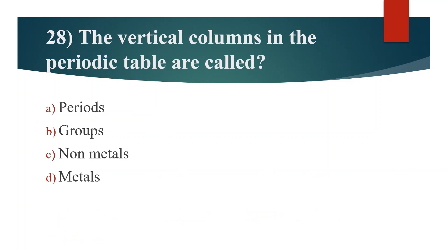Twenty-eighth question. The vertical columns in the periodic table are called. Option A: Periods. Option B: Groups. Option C: Non-metals. Option D: Metals. Answer is Option B: Groups.